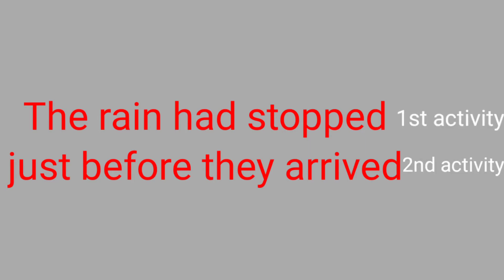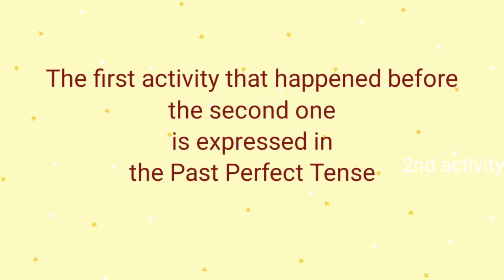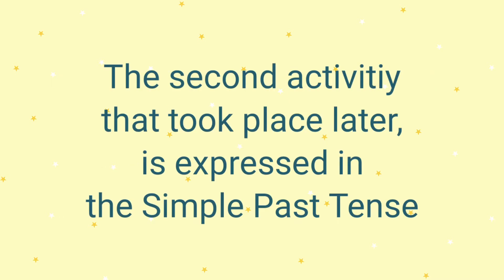Let me give you an example. The rain had stopped just before they arrived. So you see, there are two activities — one took place before the other. The rain had stopped — that's the first activity. Just before they arrived — that's the second activity. The first activity happened before the second activity and is expressed in the past perfect tense, whereas the second activity, which happened later, is always expressed in the simple past tense.